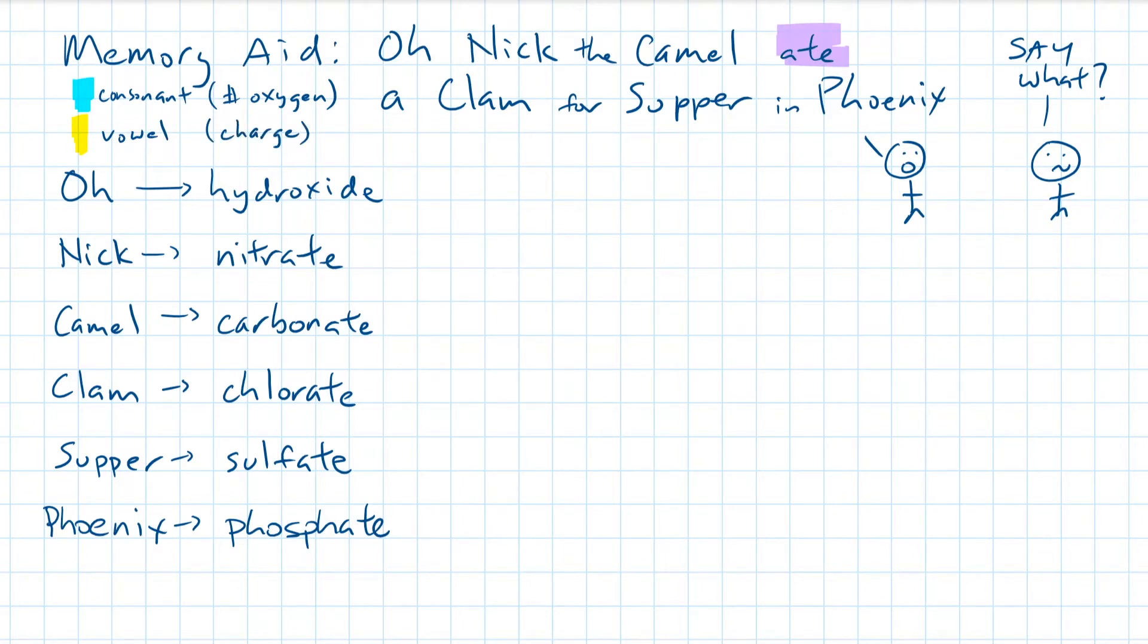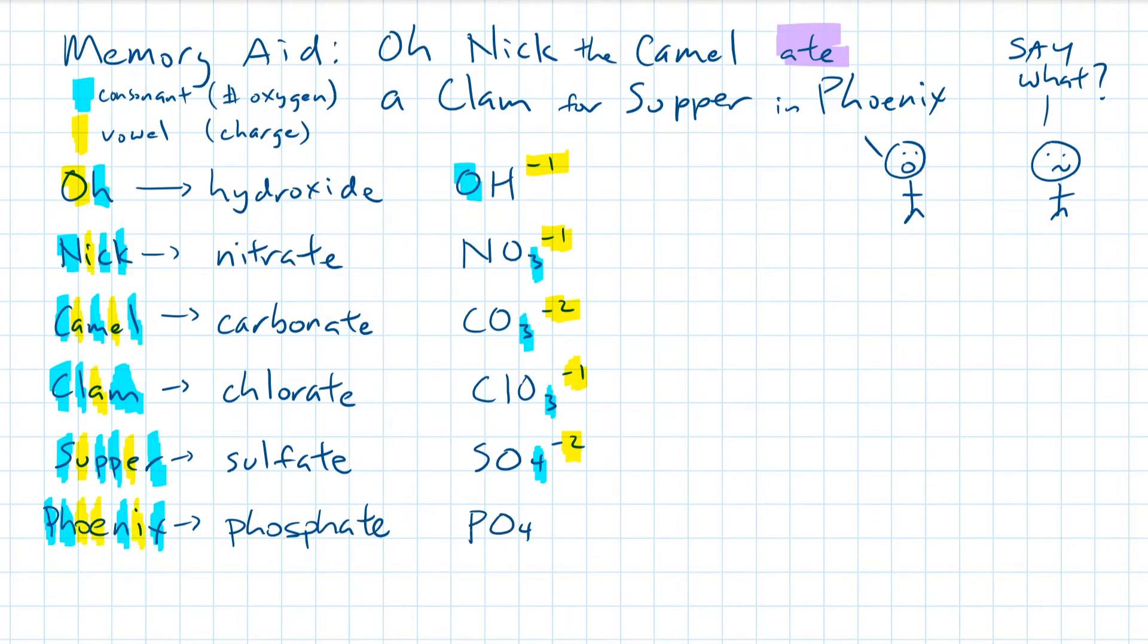Let's decode all of them together. OH has one consonant and one vowel, so it's OH with a charge of negative 1 written in superscript. Nick has three consonants and one vowel, so it's NO3 with a charge of negative 1. Camel has three consonants and two vowels, so it's CO3 with a charge of negative 2. Clam has three consonants and one vowel, so it's ClO3 with a charge of negative 1. Supper has four consonants and two vowels, so it's SO4 negative 2. Phoenix has four consonants and three vowels, so it's PO4 negative 3.